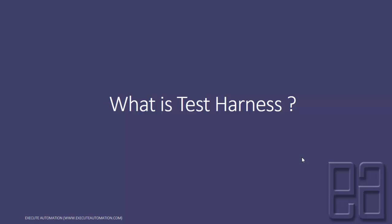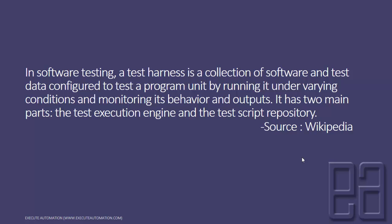First of all, what is a test harness? In software testing, a test harness is a collection of software and test data configured to test a program unit by running it under varying conditions and monitoring its behavior and output. It has two main parts: the test execution engine and the test script repository. This content is available on Wikipedia. Any given test harness system has these two main parts.